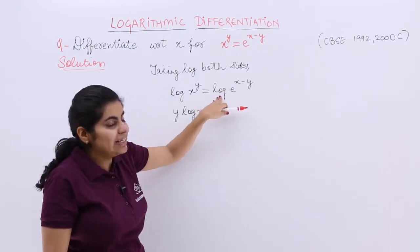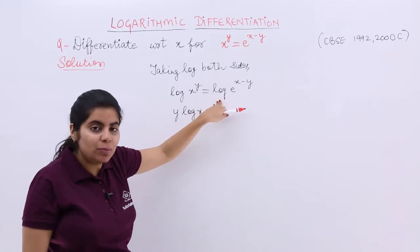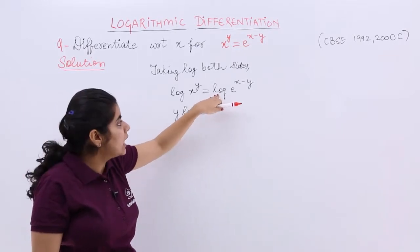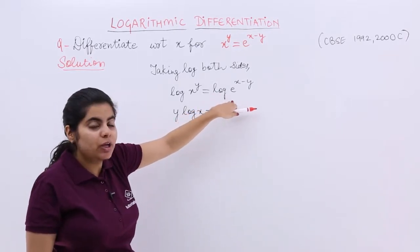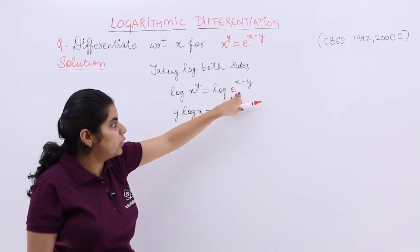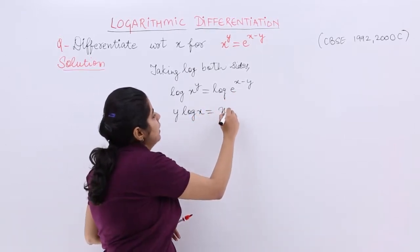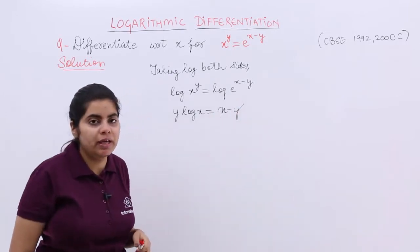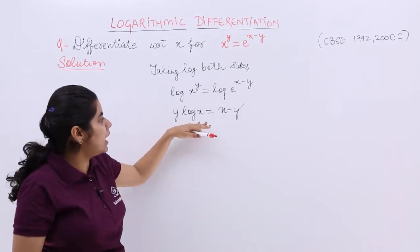And here also you see that x minus y is there. Now already it is log. It is automatically meaning that the base is exponential e only. And exponential is here, exponential is here. They basically cancel. It becomes x minus y.